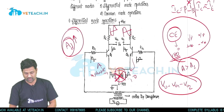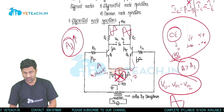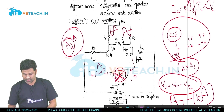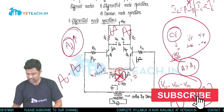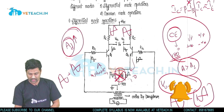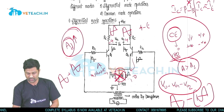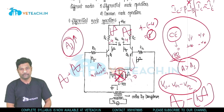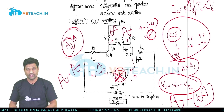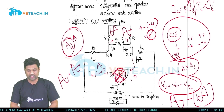The output voltage Vout equals Vout1 minus Vout2. If Vout1 is +4 and Vout2 is -4, then Vout = 4 minus (-4) = 8. So in differential mode operation, there exists an output, there is no signal flowing through RE, the output is maximum, and the gain Ad is maximum. RE is effectively eliminated in differential mode operation.